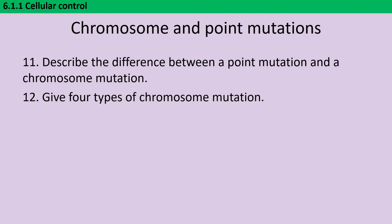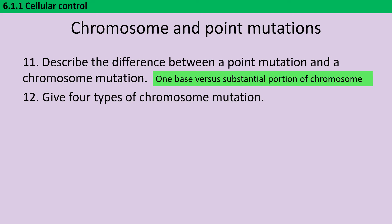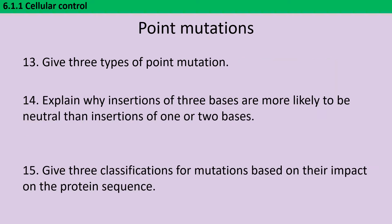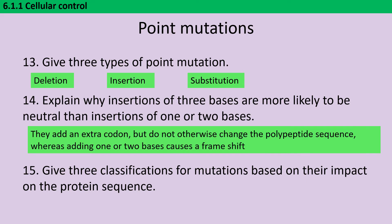A point mutation refers to the change in a single base or maybe just a couple of bases, whereas a chromosome mutation involves a substantial proportion of the chromosome. The four kinds of chromosome mutation are deletion, duplication, translocation and inversion. Point mutations may be deletions, insertions or substitutions. If you're inserting three bases, it's going to have less of an impact on the protein because it's not going to cause a frameshift mutation, meaning all of the downstream amino acids are still coded for correctly — you're just going to have one extra amino acid inserted.